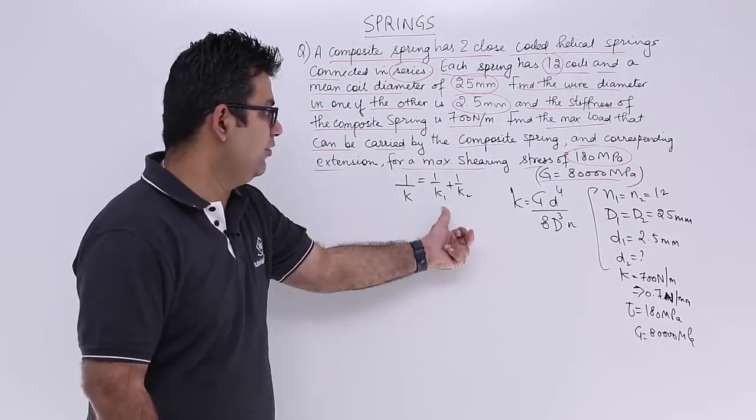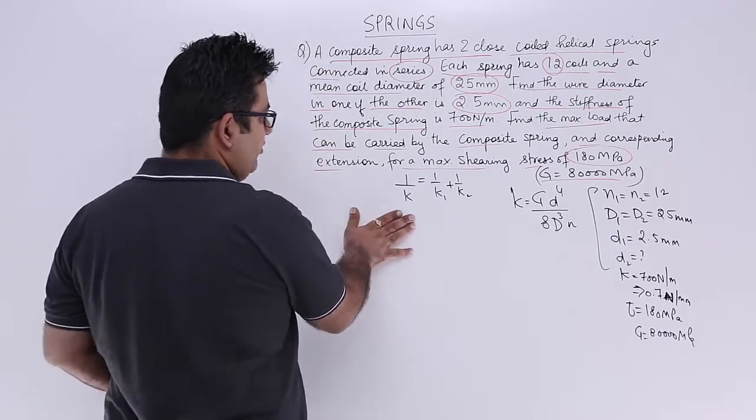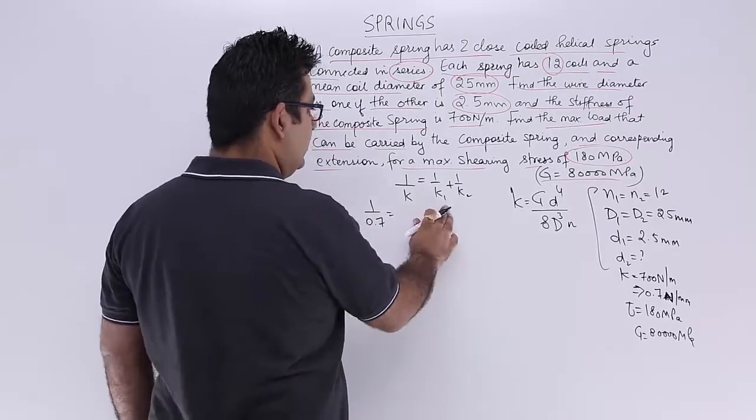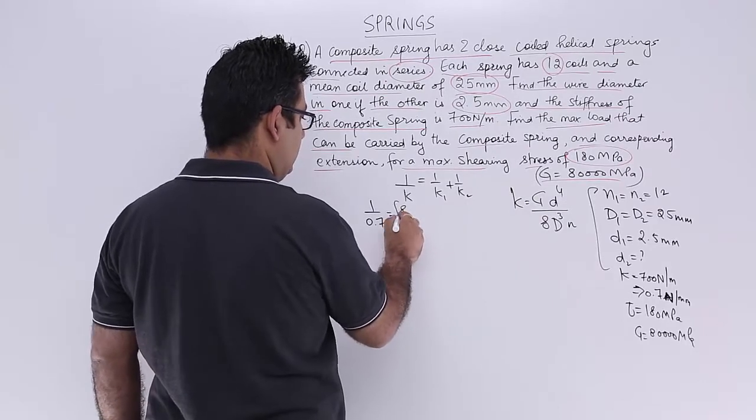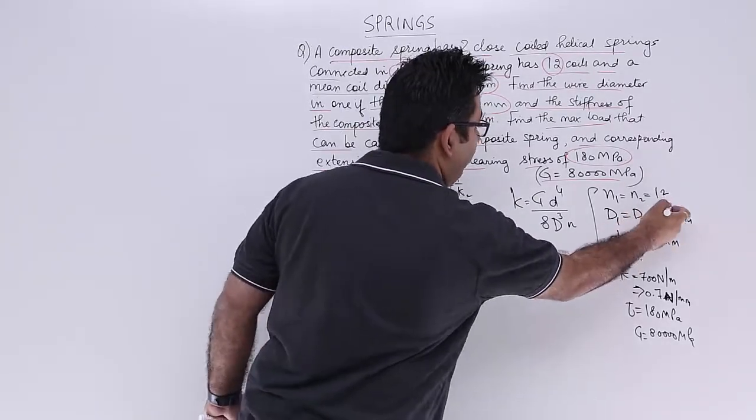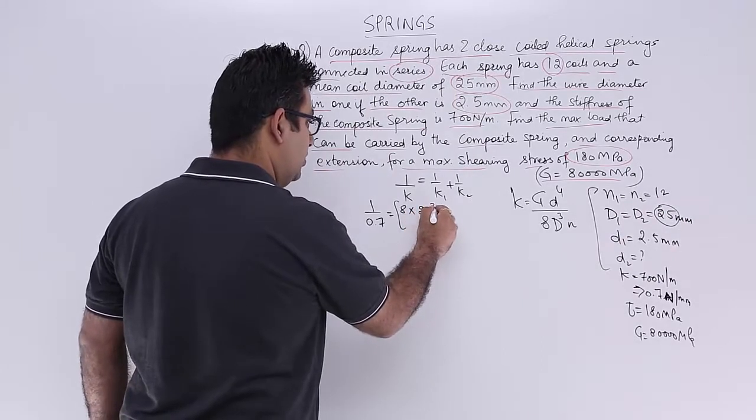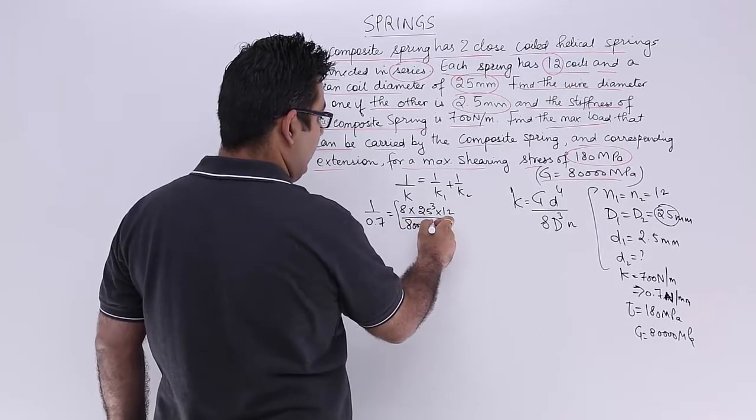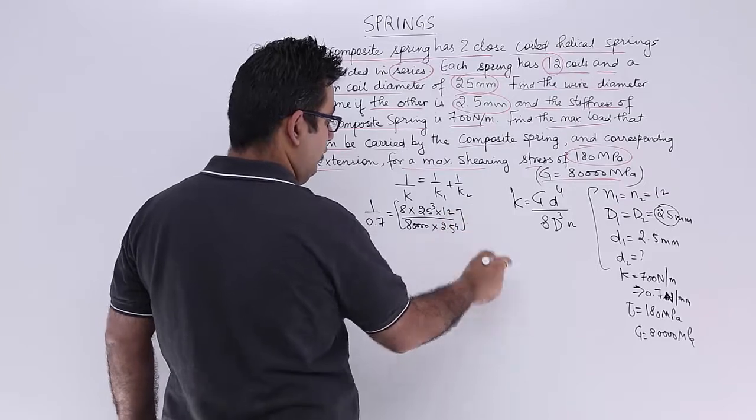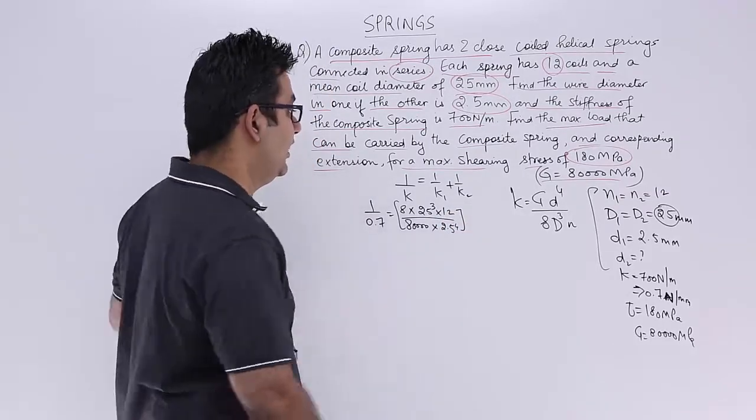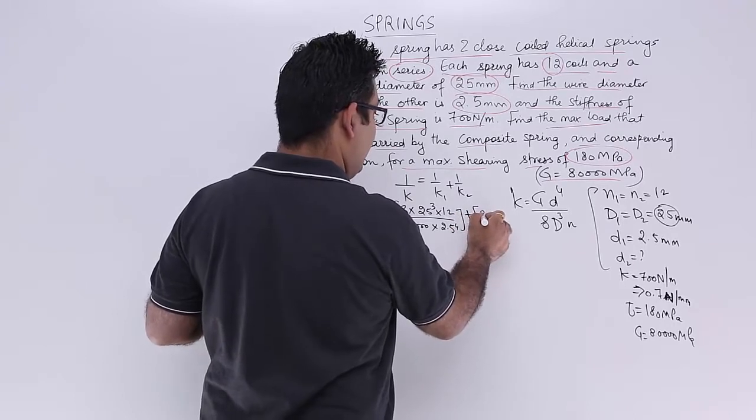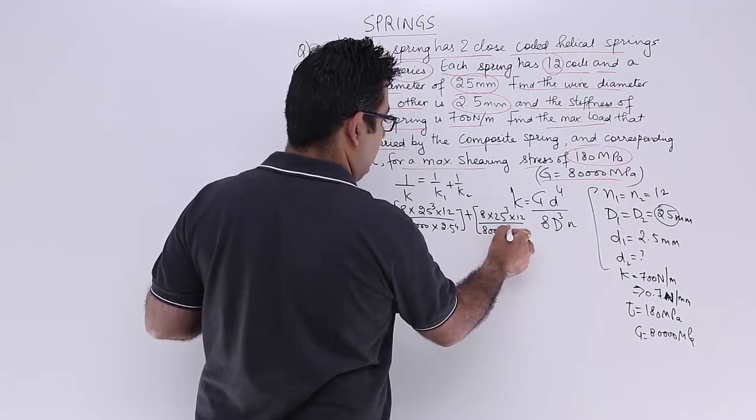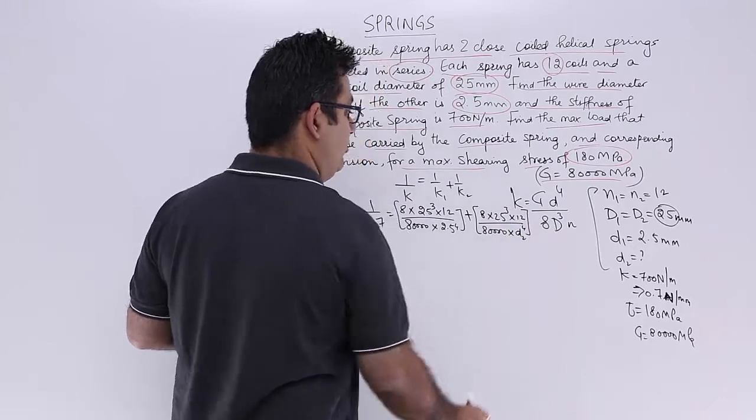So I will put this value over here. I know the value of this k over here. So that is 0.7. You will have 1 by 0.7 over here equals, so k1 the reciprocal will become 8 times capital D cubed, that is 25 cubed, times N which is 12 upon G which is 80,000 times 2.5 to the power 4. So that is the first term. The second term would be 8 times 25 cubed times 12 upon 80,000 times D2 to the power 4.